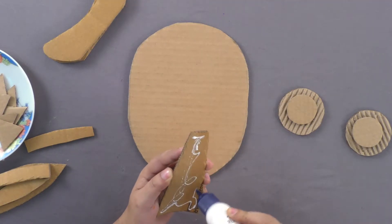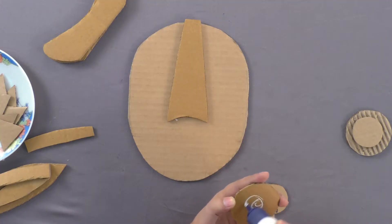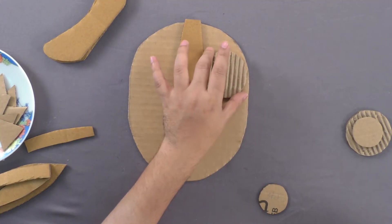Using adhesive, paste the cut-out pieces on the oval shape one by one on the front to make the face.